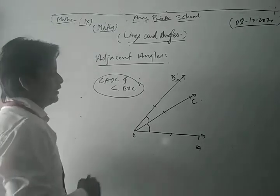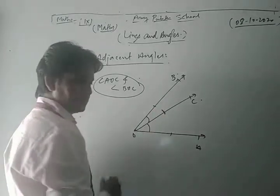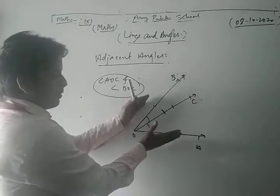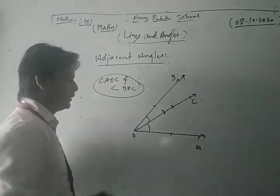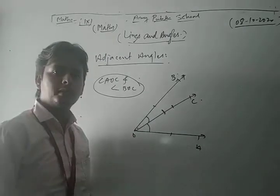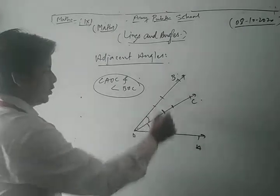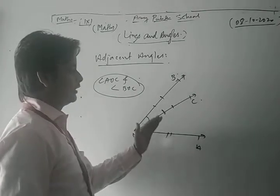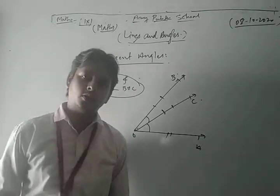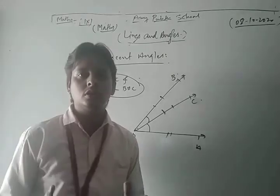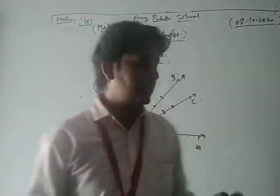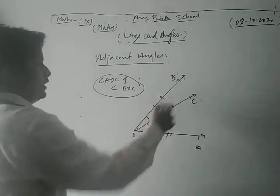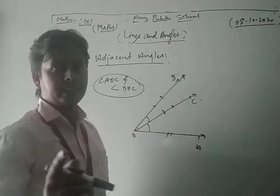The second condition for adjacent angles is they have a common arm, here OC is the common arm. The third condition is that the non-common arms — here OA and OB — lie on either side of the common arm. So angle AOC and angle BOC are said to be adjacent angles.